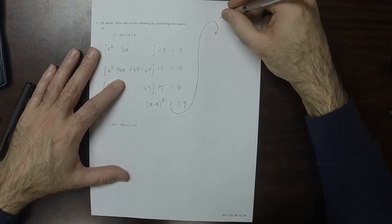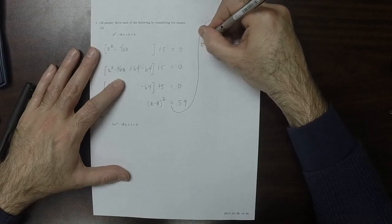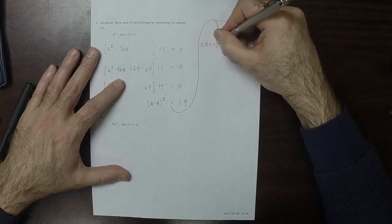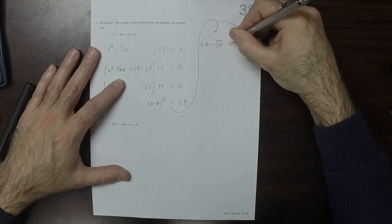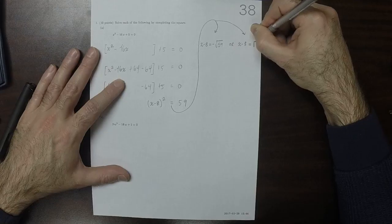Two possibilities. x minus 8 is negative square root of 59, or x minus 8 is the square root of 59.